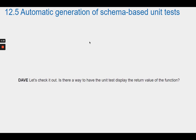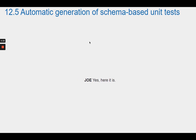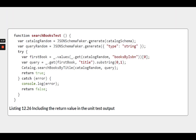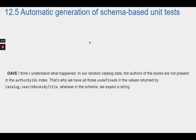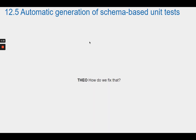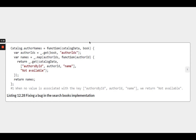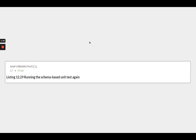Dave asks if there's a way to have the unit test display the return value of the function. Joe updates the code to include it. Dave reruns the test and understands: in the random catalog data, the authors of books are not present in the authorByIds index, causing undefined values where the schema expects a string. Dave fixes catalog.authorNames to return the string 'not available' when an author doesn't exist. The test passes.